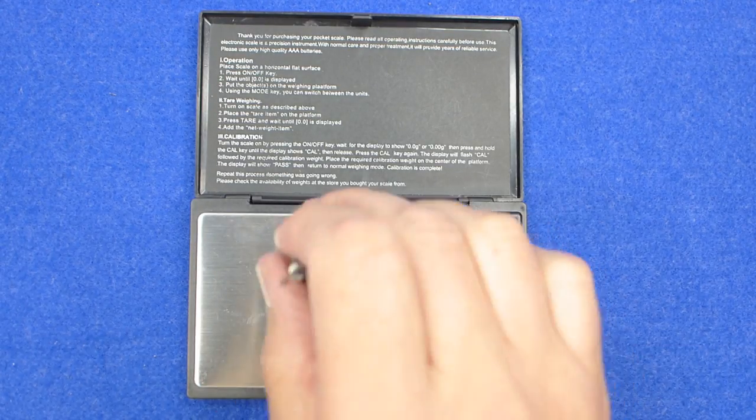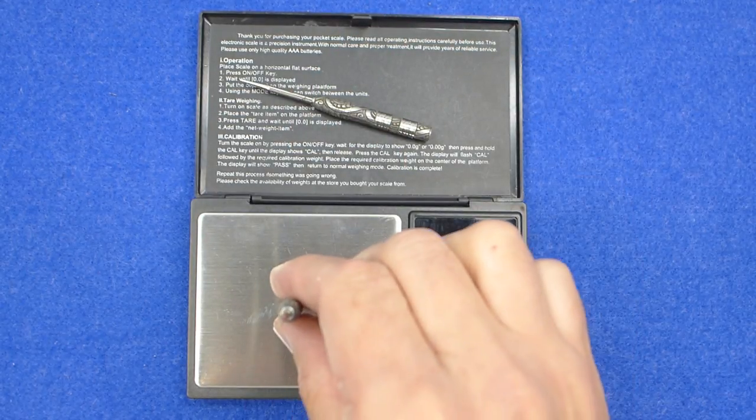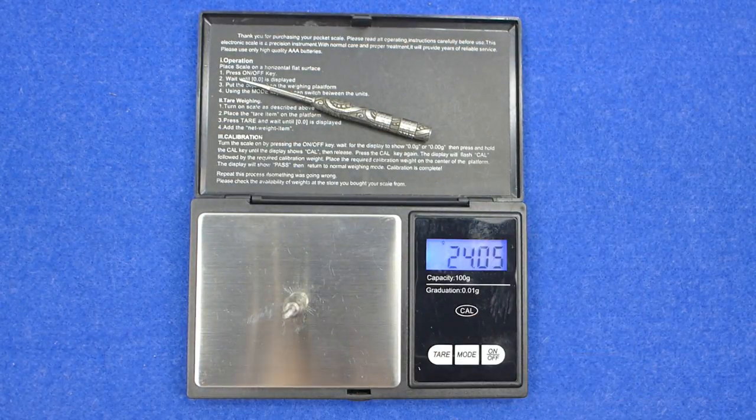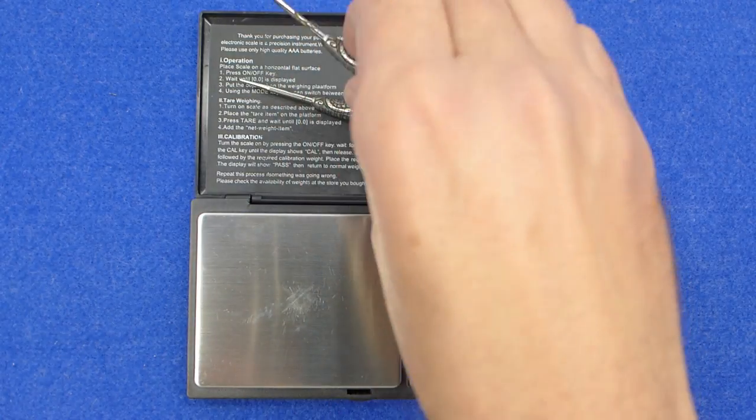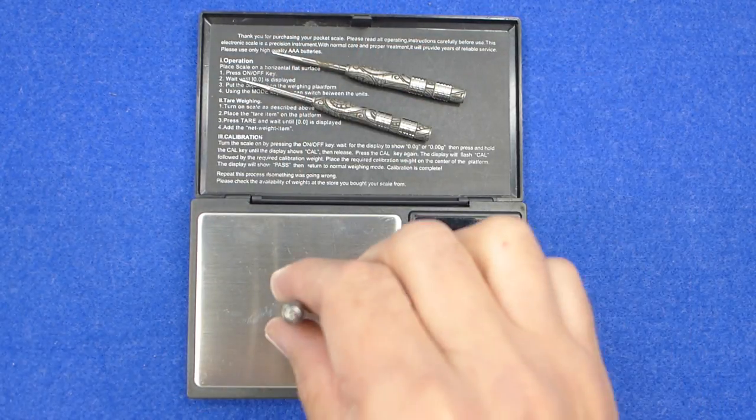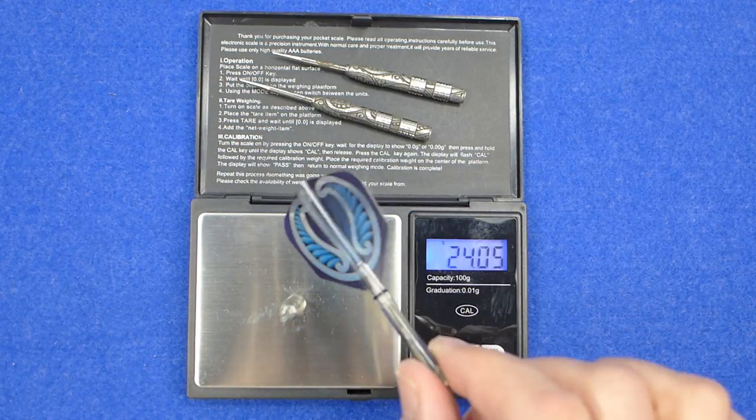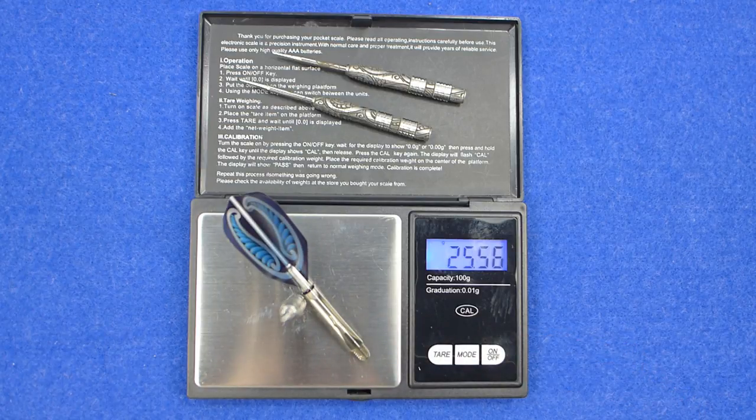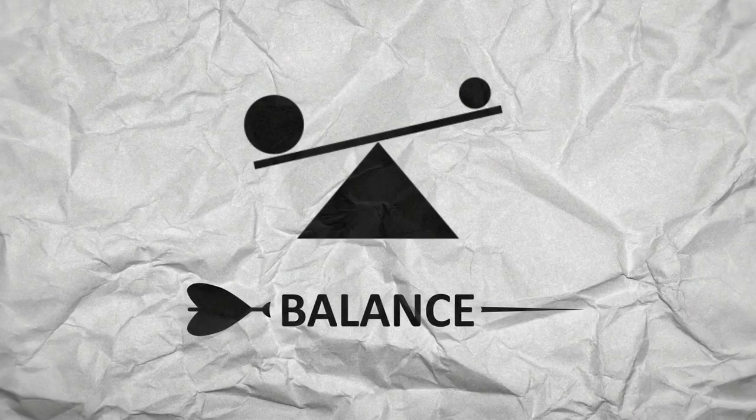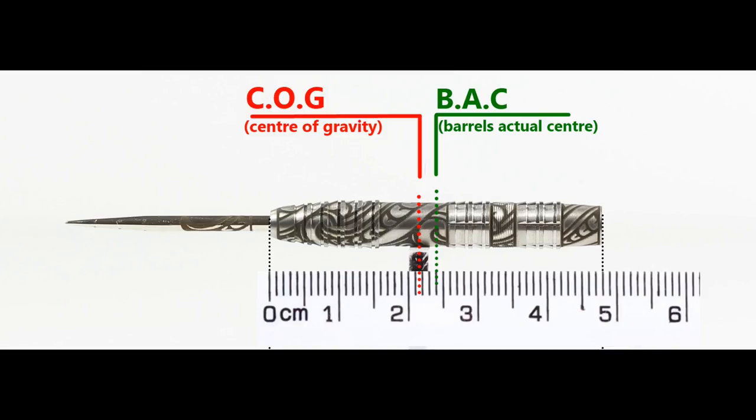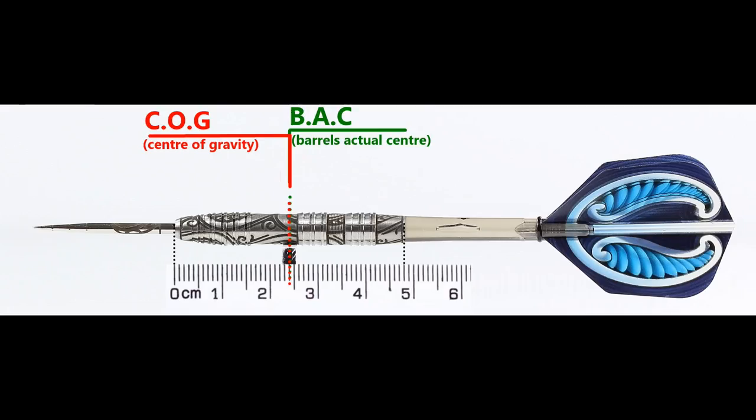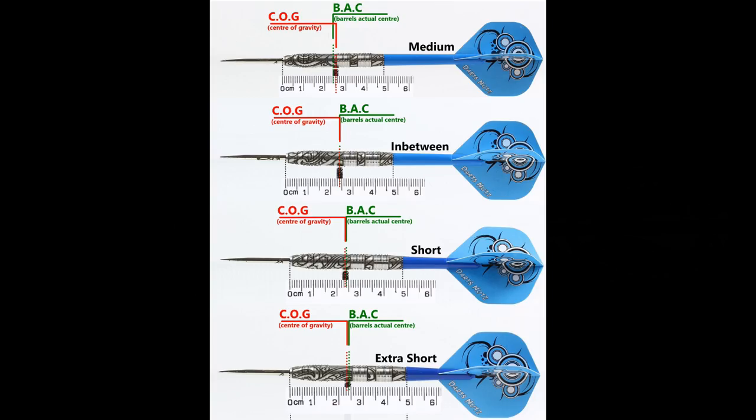24.05 grams, 24.05 again, and 24.05 so perfectly matched. The full setup is 25.5. With nothing attached the balance is a little towards the front and with the supplied setup it's exactly in the center. This is the balance with medium in-between short and extra short stems and standard flights.